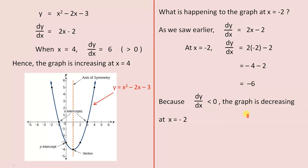So because dy/dx is less than 0, the graph is decreasing at x equals negative 2. And you can see that.